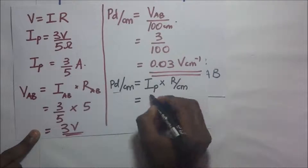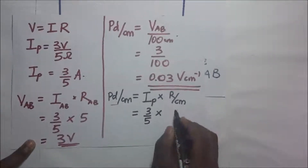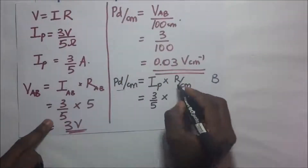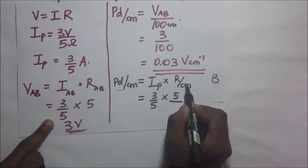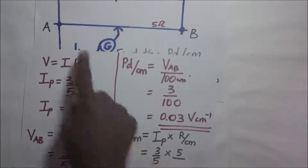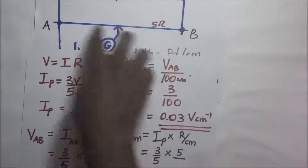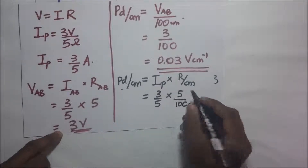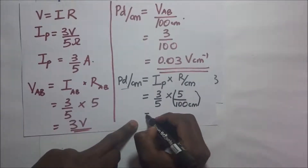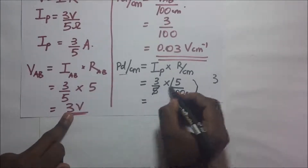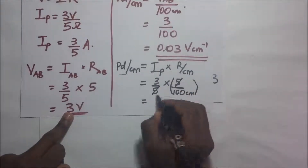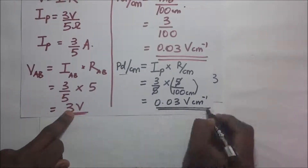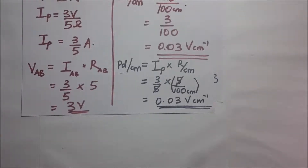The IP we got is 3/5. We multiply that by the resistance per centimeter. The resistance of the whole wire is 5 ohms, and since we are looking for resistance per centimeter, we divide the total resistance by the entire length of the wire, which is 100 centimeters. So the resistance per centimeter is 5/100 ohms per centimeter. Therefore: 3/5 multiplied by 5/100 — the 5s cancel — giving 3 divided by 100, which is 0.03 volts per centimeter.